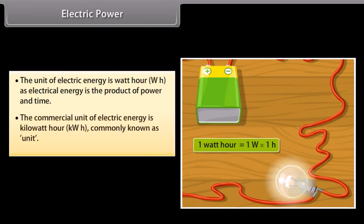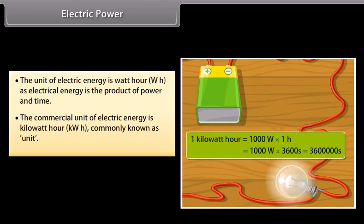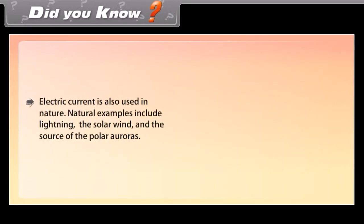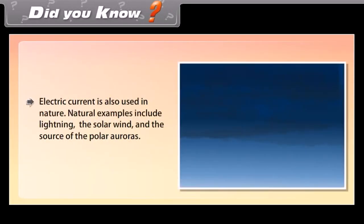The commercial unit of electric energy is the Kilowatt-hour (kWh), commonly known as a unit. Electric current also occurs in nature; natural examples include lightning, the solar wind, and the sources of the polar auroras.